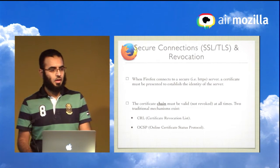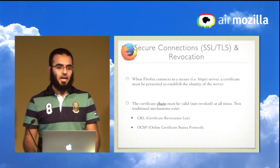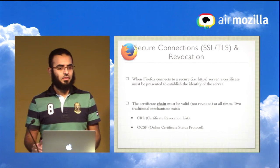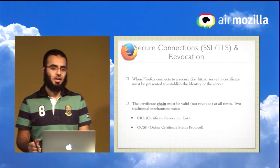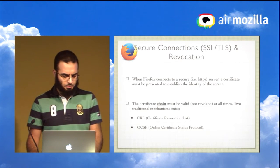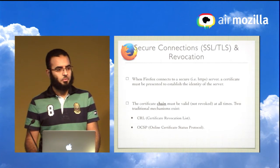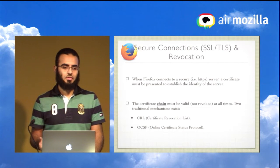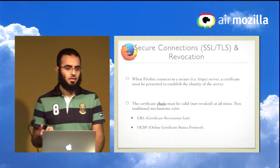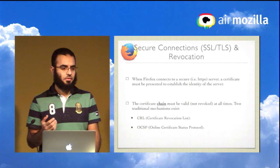Traditionally there are two main mechanisms for revocation. The first is CRLs — Certificate Revocation Lists — which are lists signed by a CA containing all certificates revoked by a particular issuer. The other protocol is OCSP, a CA server you can ping with a certificate to ask whether it's valid or revoked, and you get a signed response.